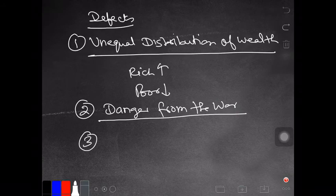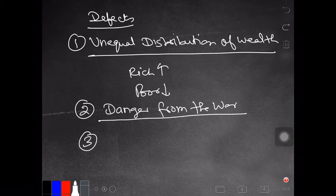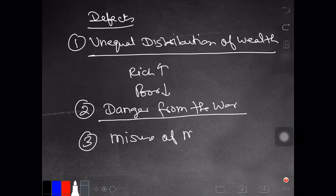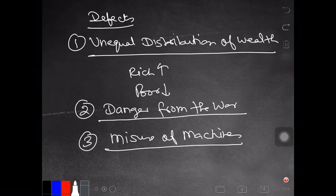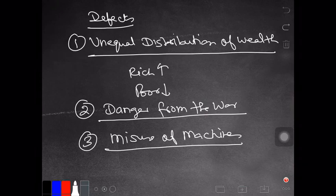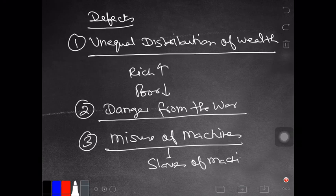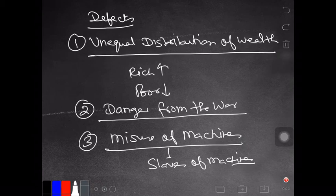Third defect which is very important for us also is the misuse of machines. He says in the modern age, due to progress in science and technology, we have invented many machines. The machine is a tool which saves our energy, which saves our time. But unfortunately, we have become slaves of machines. We were supposed to become masters of machines. But in the modern age, we have become slaves of machines. We have become addicted to machines. We are misusing them. We are spending a lot of time on machines. So this is also one of the major defects of our modern civilization.